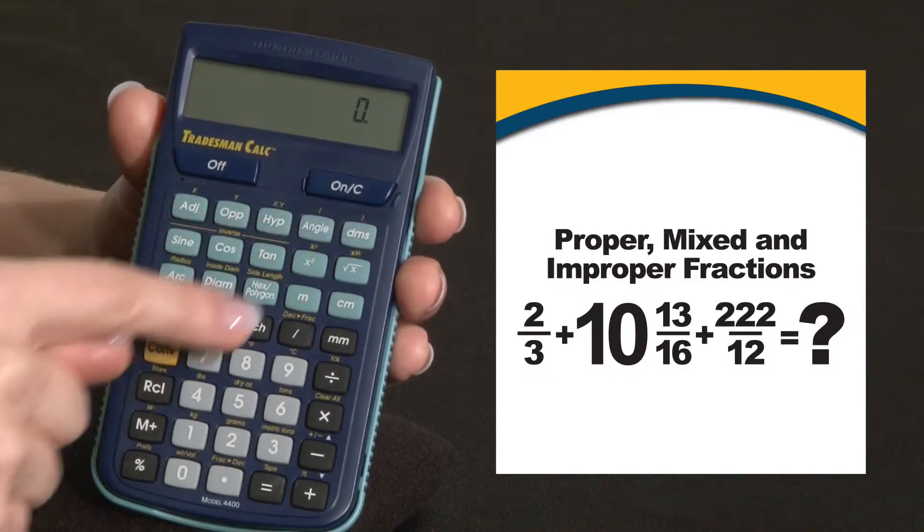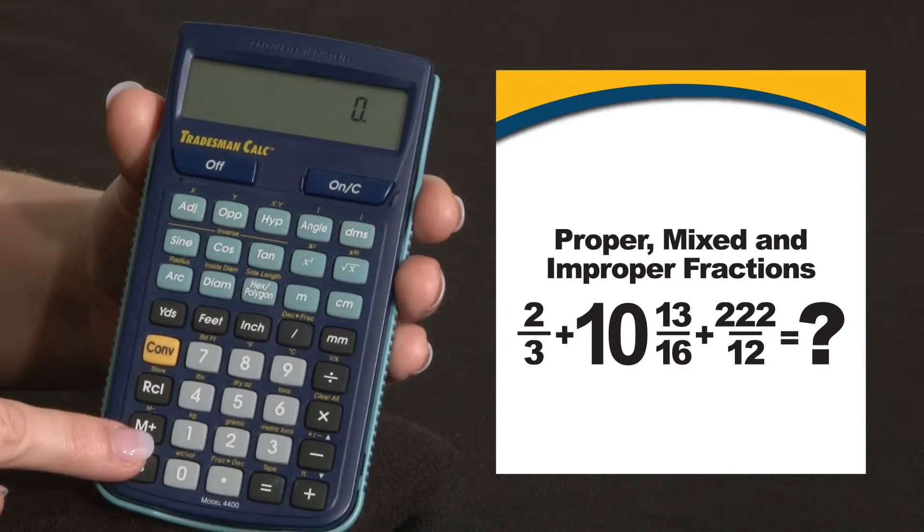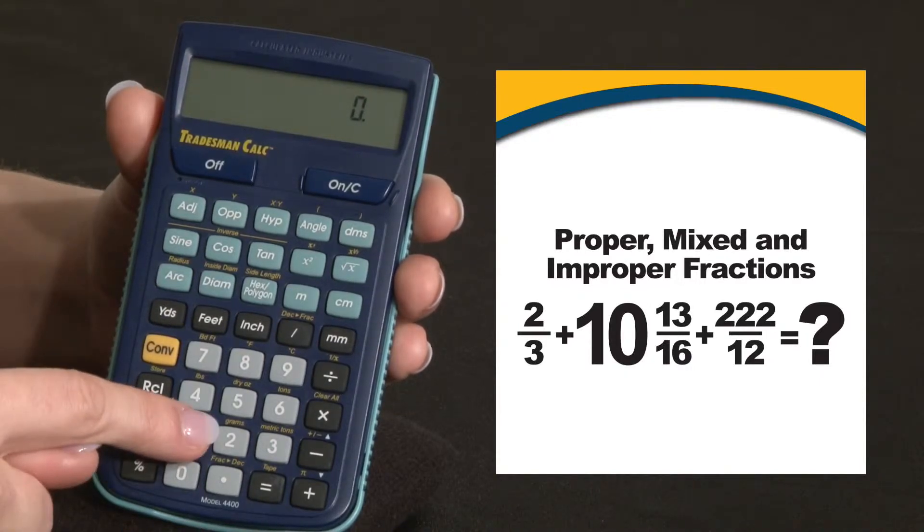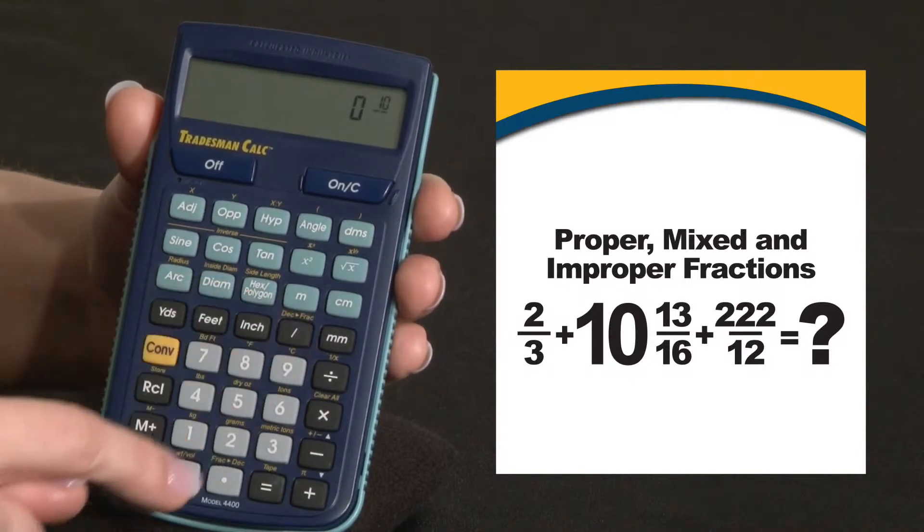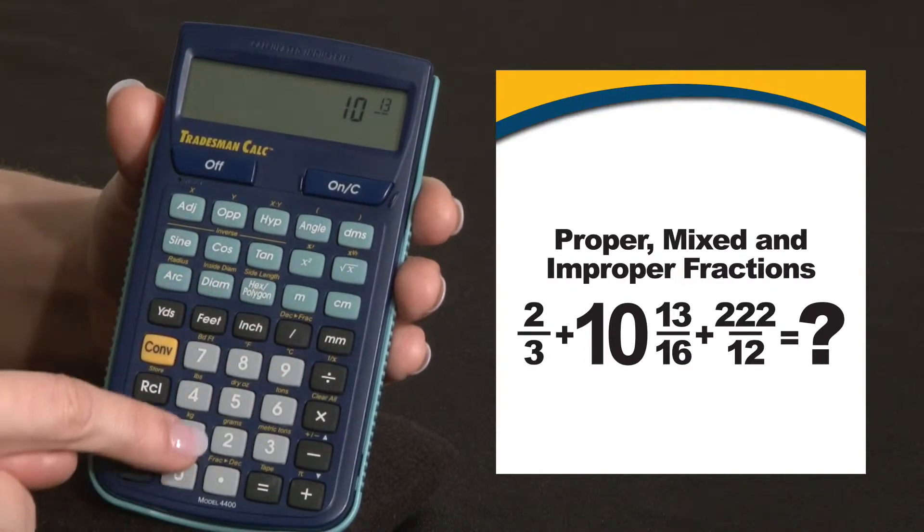To enter mixed number fractions, we use the fraction bar twice. For example, to enter ten and thirteen sixteenths, we press ten, fraction bar, thirteen, fraction bar again, sixteen.